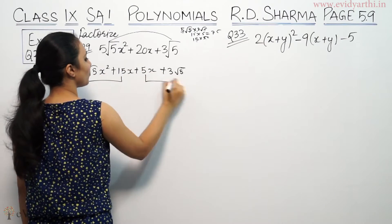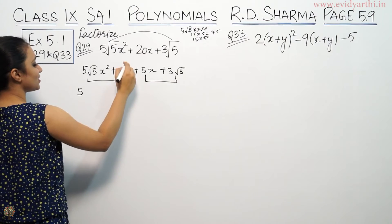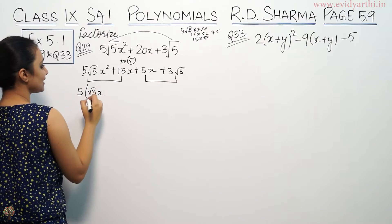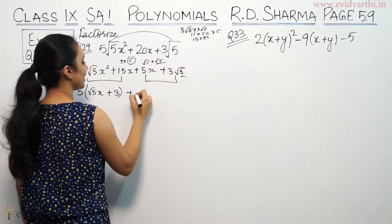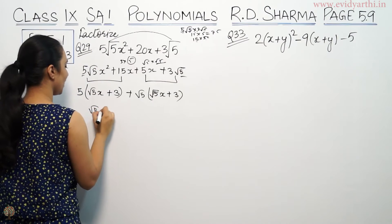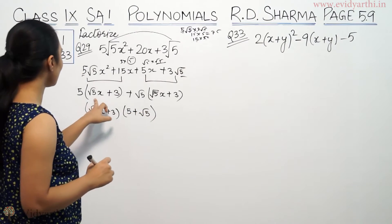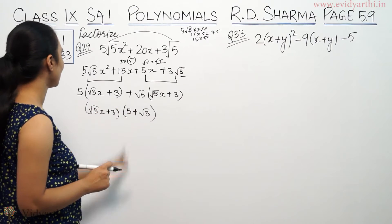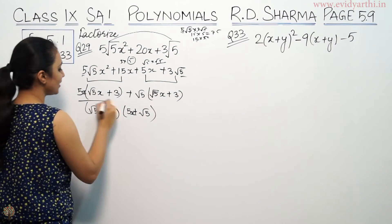You put those terms here. We take common factors from each group. So we have 5 common here. This gives us root 5x plus 3, so this is root 5x plus 3, and it will be 5 plus root 5. This is root 5x plus 3 and this is 5 plus root 5. So we have two brackets. The answer is (√5x + 3)(5 + √5).